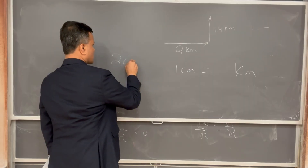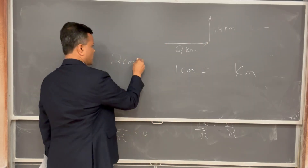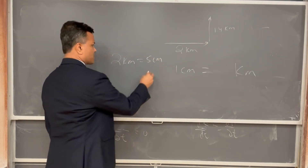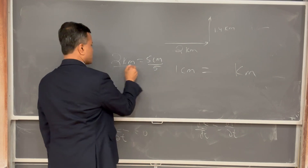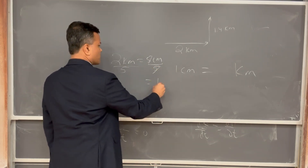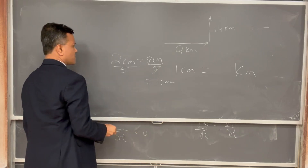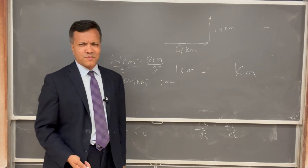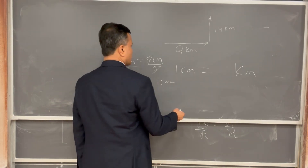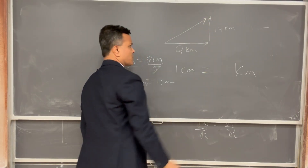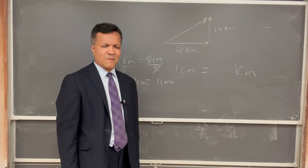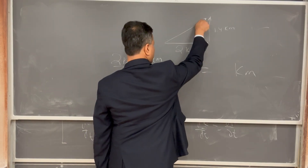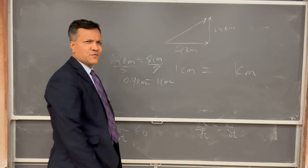Let's say the ruler gives you five centimeters from here to here. Since I asked you one centimeter is how many kilometers, you divide both sides by five — five cancels — so one centimeter equals two over five, which is 0.4 kilometer. That's the answer. Next time if I ask you what is the displacement, you use the ruler to find how many centimeters, then multiply by 0.4 kilometer per centimeter.